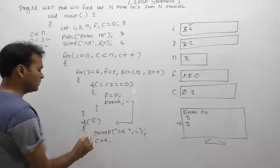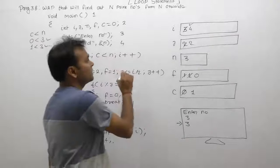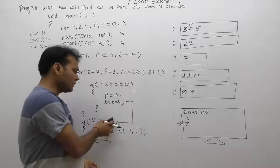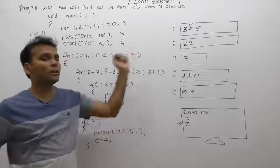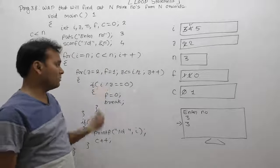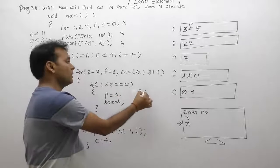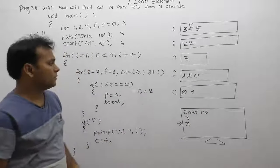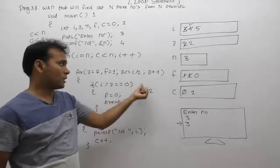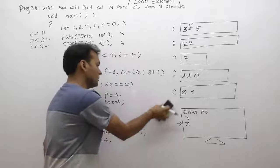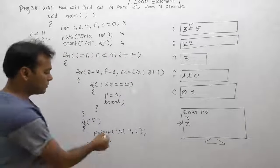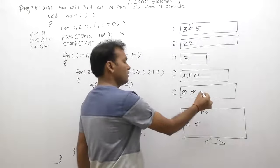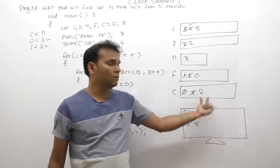I++ makes I equal to 5. Now checking if 5 is prime: 5 divided by each J value starting from 2. The inner loop condition is J less than or equal to 5 divided by 2, which is 2 (integer division). For J=2: 5 modulo 2 is not zero; for J=3 — wait, 3 exceeds 2, so actually only J=2 is tested. The condition eventually becomes false without finding a divisor, so F remains 1. Therefore, 5 is a prime number — 5 is displayed. C++ makes C equal to 2.